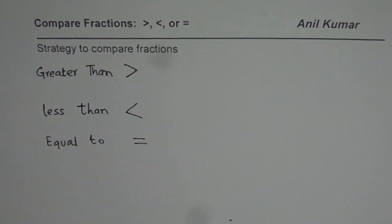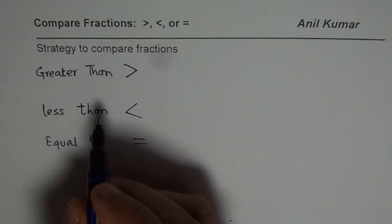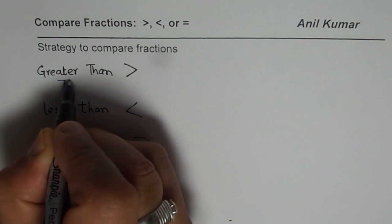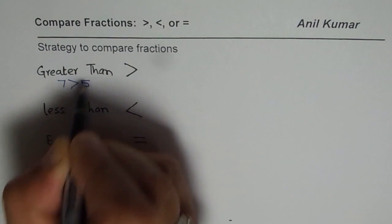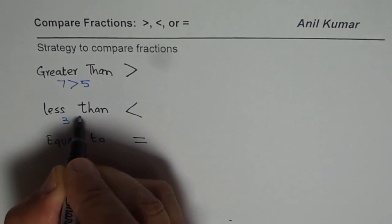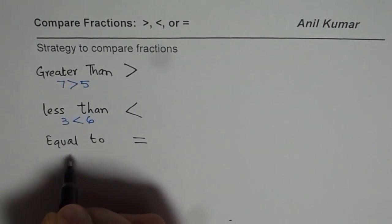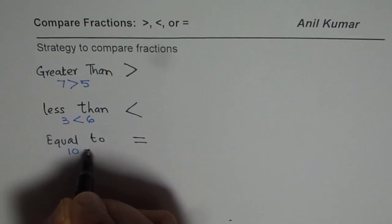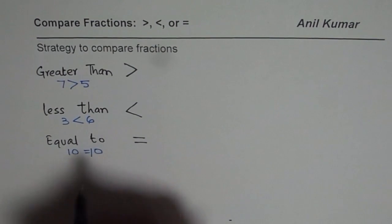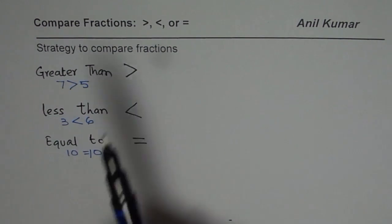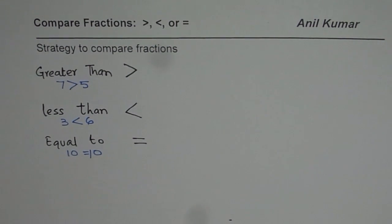Let me give you some examples. We will get to fractions later. Let us first consider the numbers themselves. Like, 7 is greater than 5, and we could say 3 is less than 6, and 10 is equal to 10. So that is what these symbols represent — greater than, less than, equal to. I hope that part is absolutely clear.